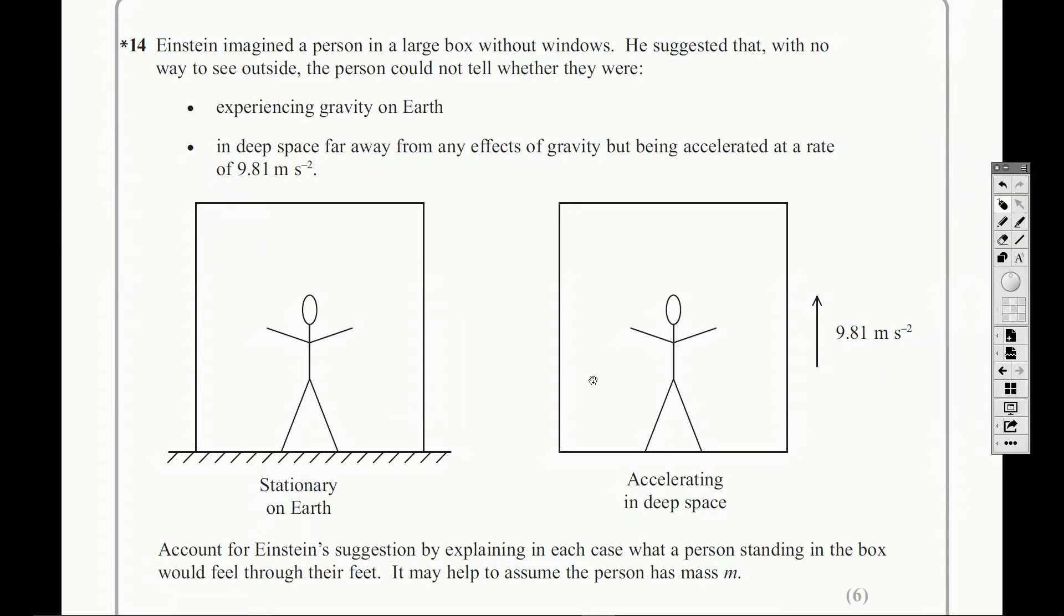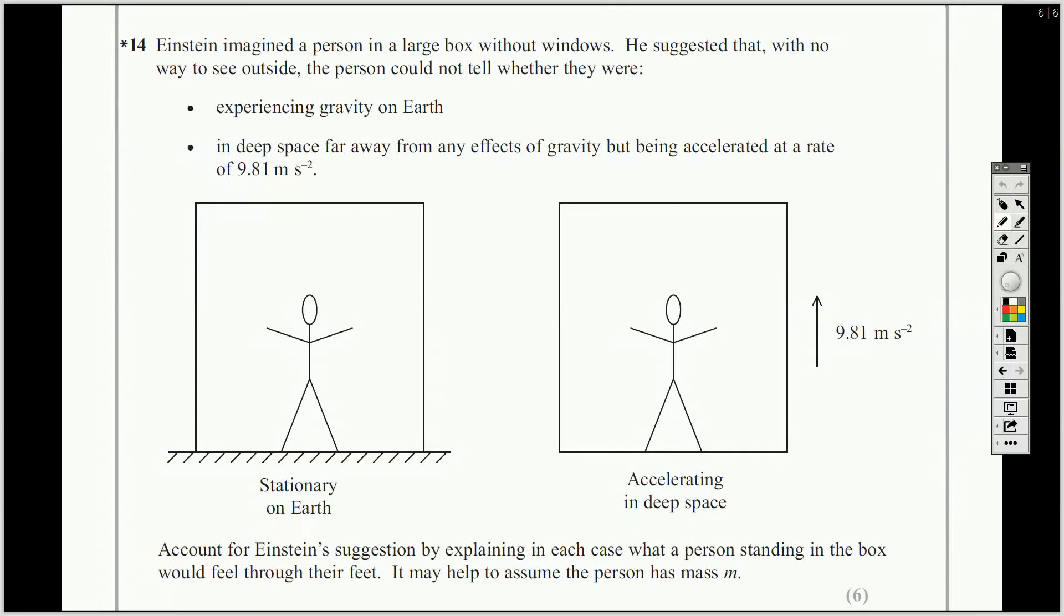One paragraph on stationary here on Earth, one paragraph on accelerating in deep space. As with all of these ones about motion, they're a bit confusing in unit one. Well, actually, it's not that confusing, it's actually a Newton's Laws question. So I'm just going to go through some of the things you might write in two paragraphs with full sentences, obviously, because it's got the little asterisk there.